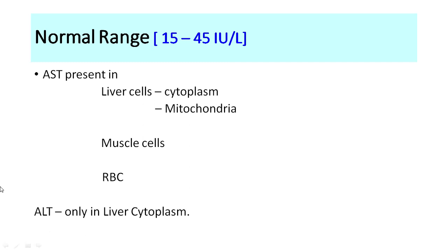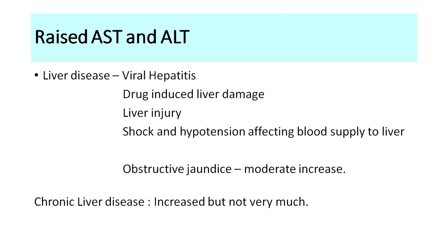AST is present in liver cells — both in the cytoplasm and the mitochondria. AST is also present in muscle cells and RBCs. ALT is present only in the cytoplasm of liver cells (hepatocytes) and not in any other tissue. ALT is therefore considered a better marker of liver disease, since it is not involved in any other tissues. AST can be affected by damage to other tissues, which must be kept in mind.